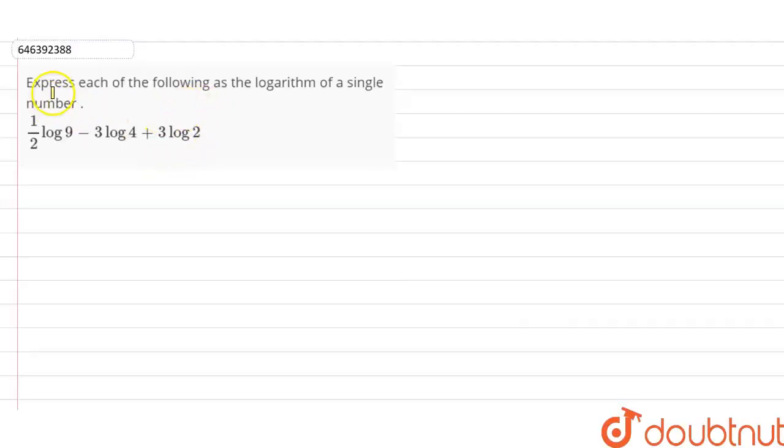Hi students, our question is that we have to express each of the following as logarithm of a single number. We will simplify the log so that we change it into a single log. Our question is 1 over 2 log 9 minus 3 log 4 plus 3 log 2.